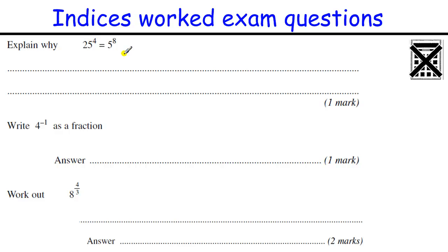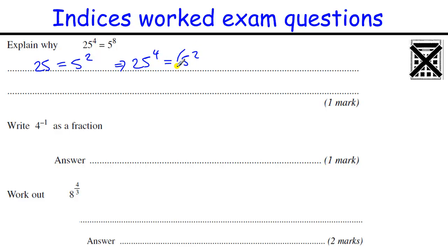Explain why 25 to the power of 4 equals 5 to the power of 8. Since 25 equals 5 squared, 25 to the power of 4 equals 5 squared to the power of 4. That's 5 to the power of 2 times 4, which is 5 to the power of 8.